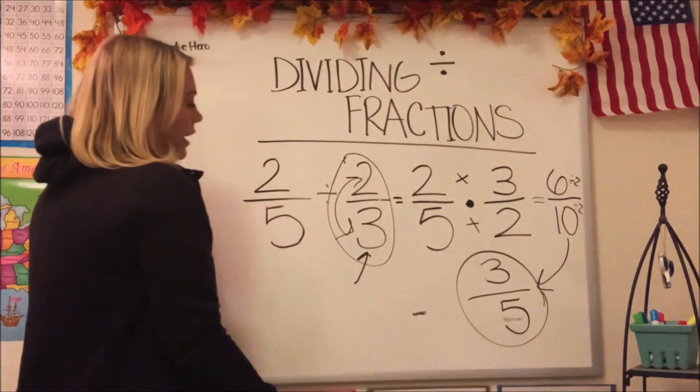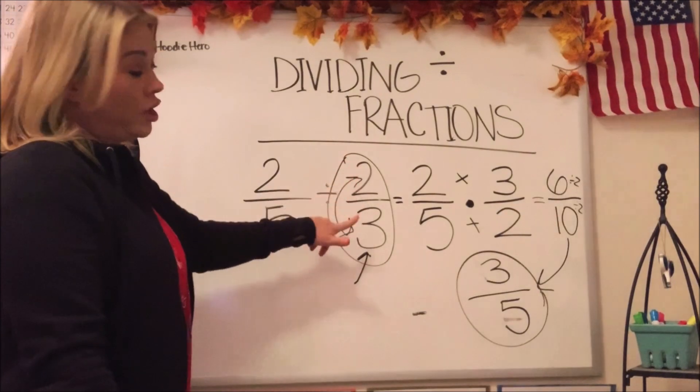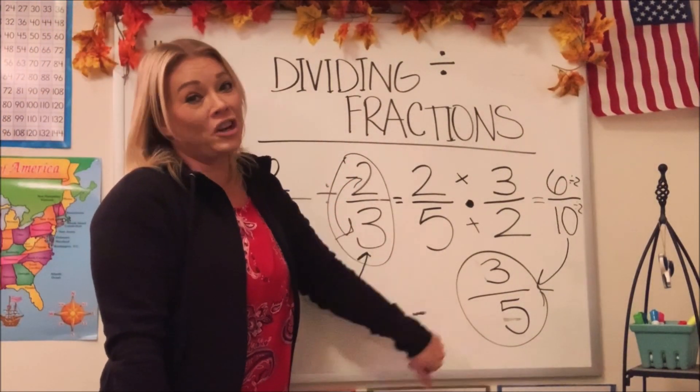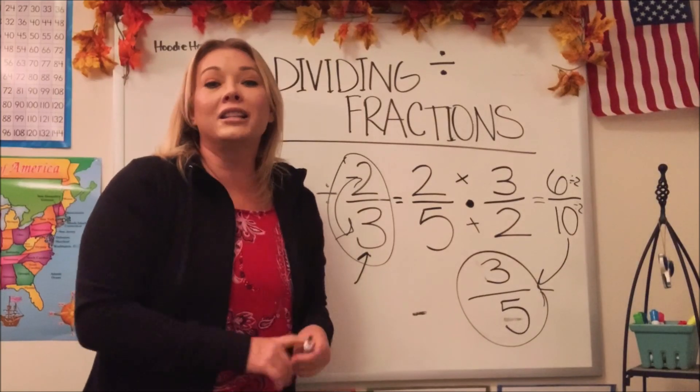So guys, our answer for two-fifths divided by two-thirds is three-fifths. Okay, let's try different ones. See how easy it is? Let's go ahead and try some more.